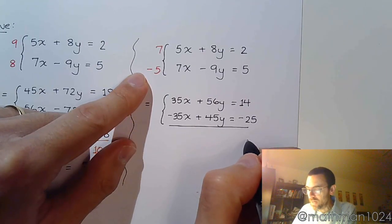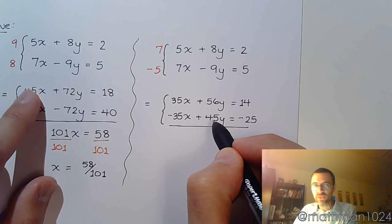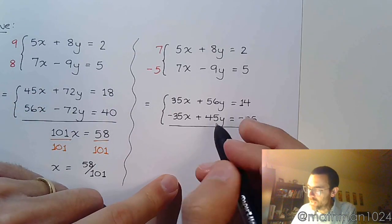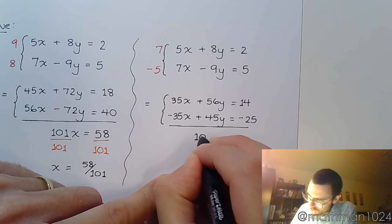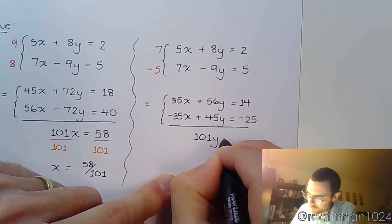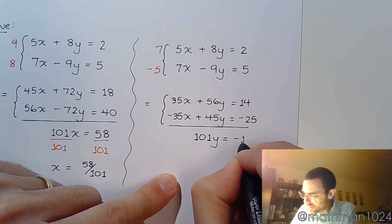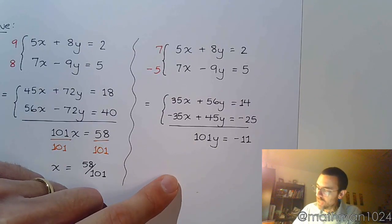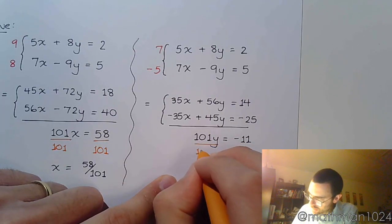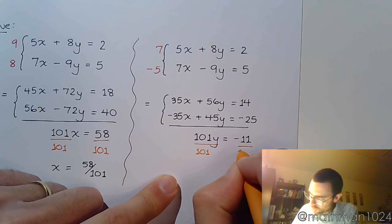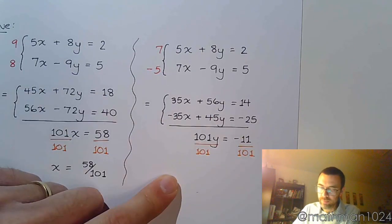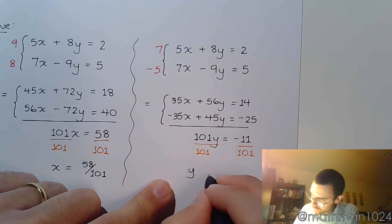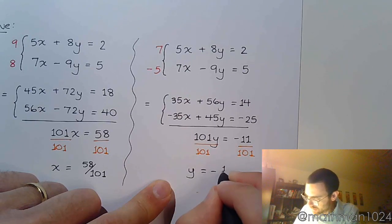Man, this looks really familiar, right? 56 and 45, just like I saw over here. Hmm, interesting. So that's 101y equals negative 11. So let's make sure that we get y completely by itself. So y equals negative 11 over 101.